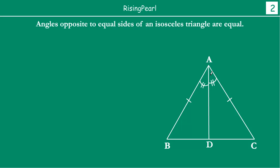We draw line AD such that it bisects angle A, and we continue to extend it forward. That line cuts BC at point D. So now we have actually two triangles: triangle ABD and triangle ACD.